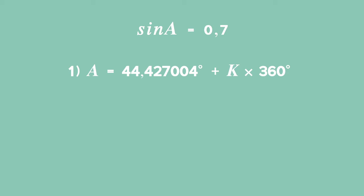And the other solution will come about in the second quadrant, where A will be equal to 180 minus 44.427004. Don't round off at this point, because we will do that on a calculator, plus K times 360. So, on our calculator, to get to our general solution, type in 180 minus that previous answer, and that gives us 135.6.